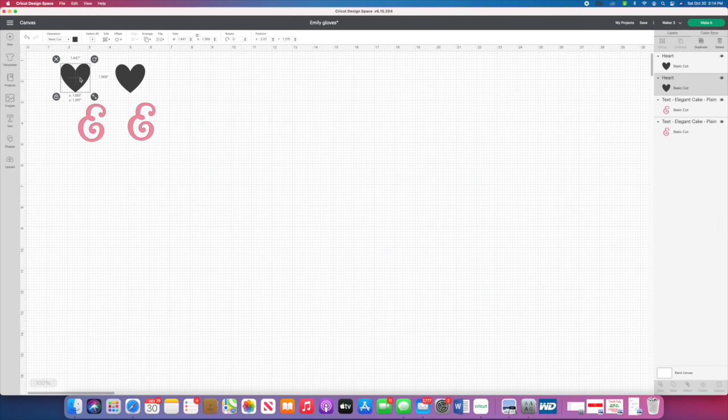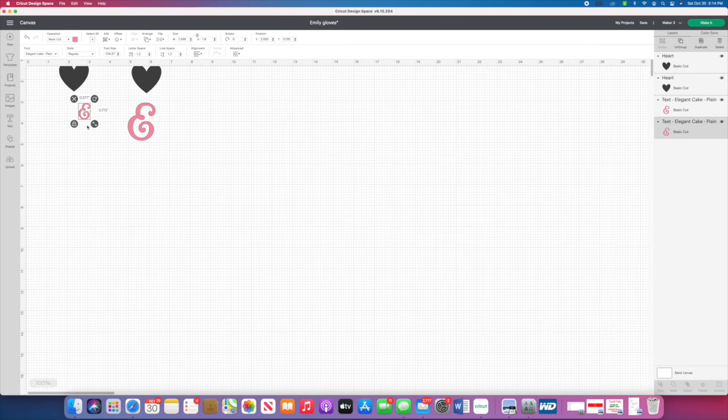For the monogram I decided I wanted to put her initials, which happened to be EE, so I'm going to put an E on one glove and an E on the other. I didn't want to just do the letter, so I grabbed the heart shape and then typed in an E and found a font that I liked. Then what I wanted to do was actually cut out the E shape within the heart, which is really simple and easy to do.